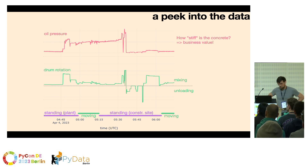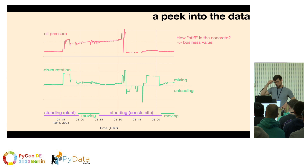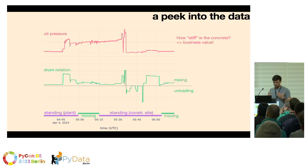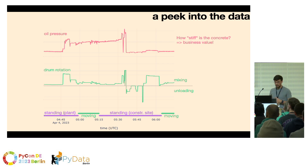Then we have the oil pressure. The oil pressure curve is interesting because you see it's loaded in four or five batches — the oil pressure increases in the beginning there at the plant. And then what you see at the last bit at the construction site where it's waiting, the oil pressure is essentially rising a little bit. This is really, really interesting to concrete technologists because this is a data point they don't usually get. They usually have only laboratory data on the concrete, and now they have real-life data with so many more data points than before. That helps them optimize the recipes and drive down the amount of cement per cubic meter of concrete — this is where the business value lies.